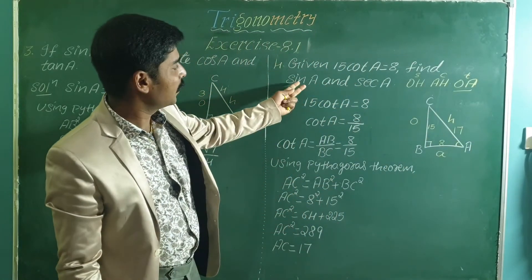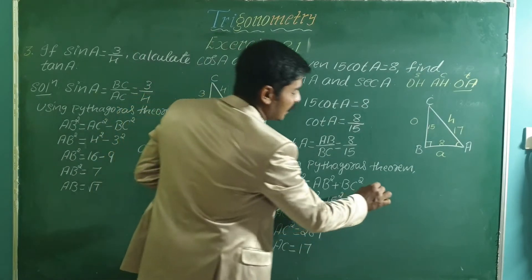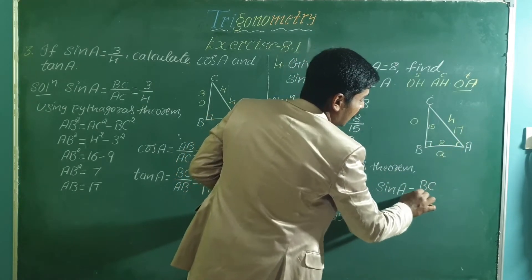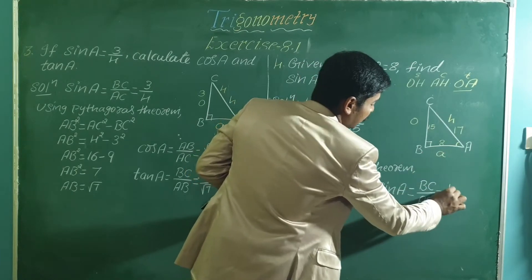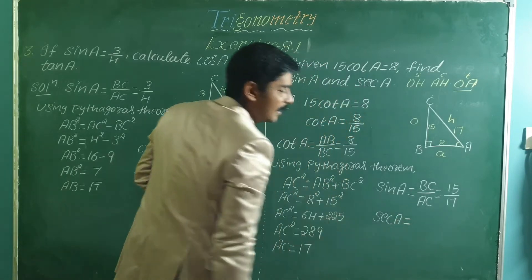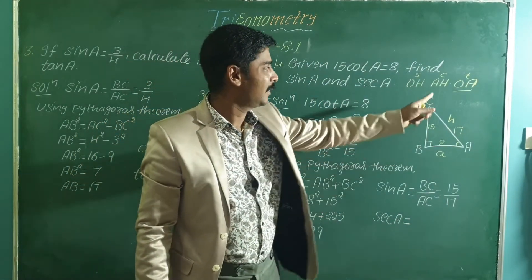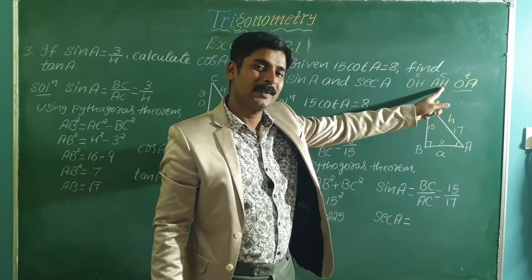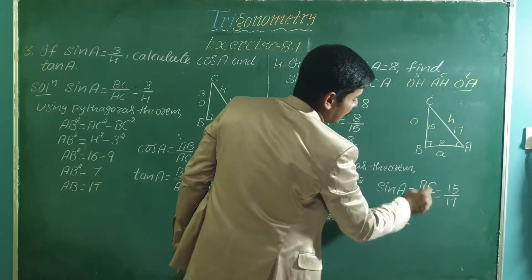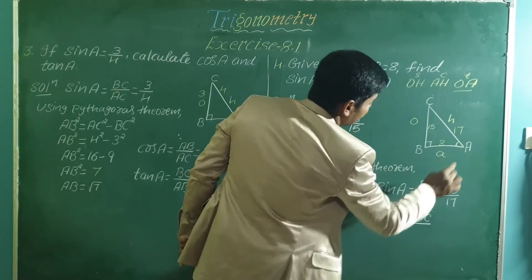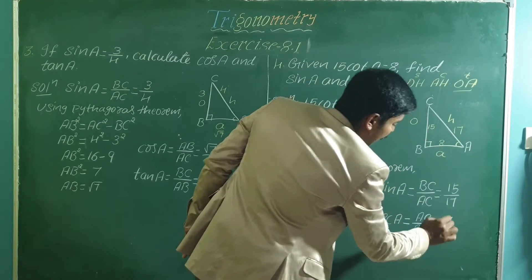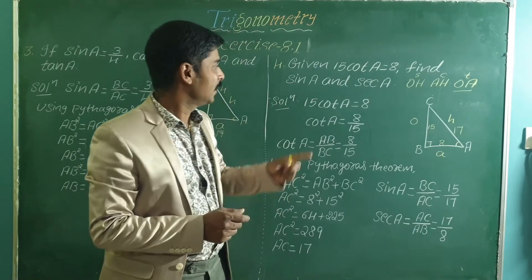Now we know all three sides. Sin A is opposite over hypotenuse. With respect to A, the opposite side is BC, so sin A equals BC over AC, which is 15 over 17. For sec A, secant is the reciprocal of cos. Cos is adjacent over hypotenuse, so secant is hypotenuse over adjacent, which is AC over AB, that is 17 over 8.